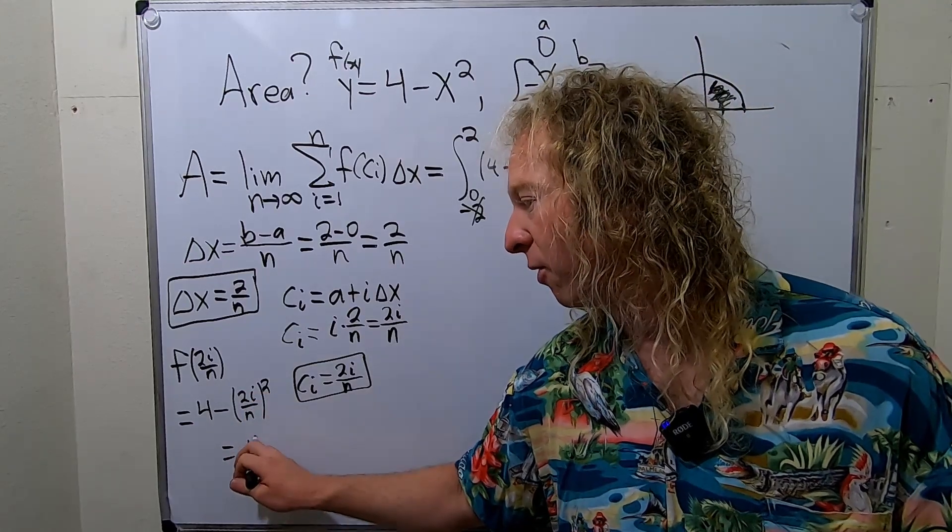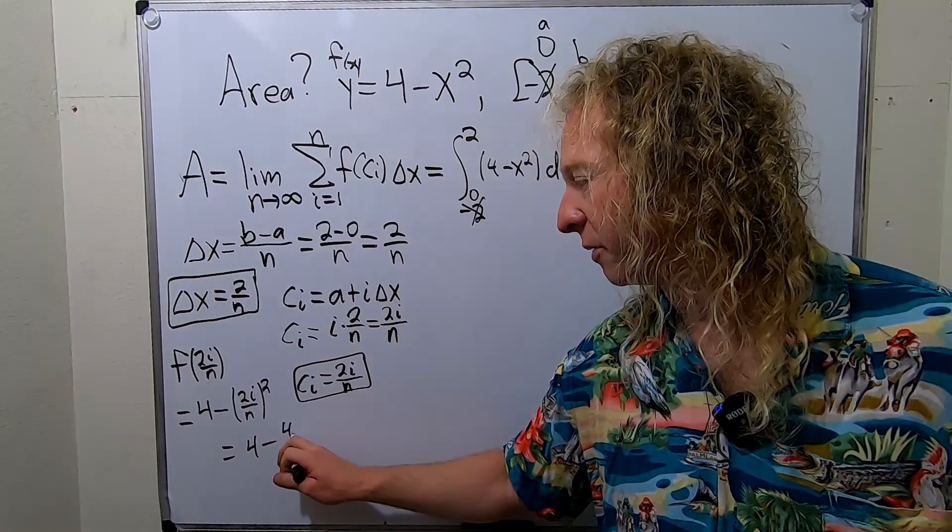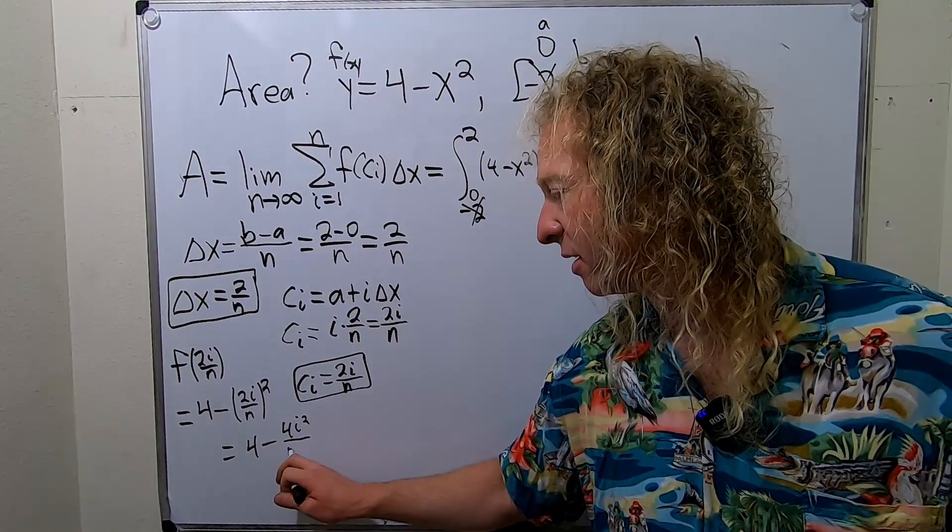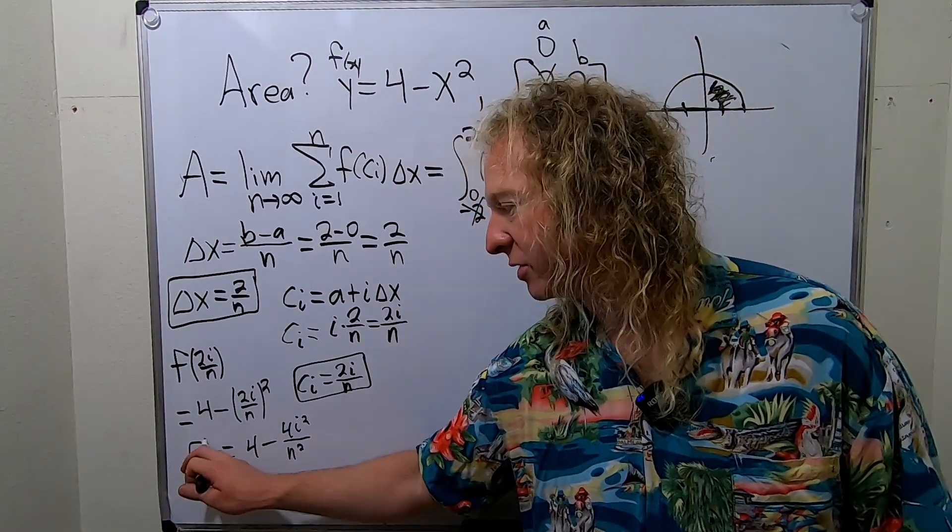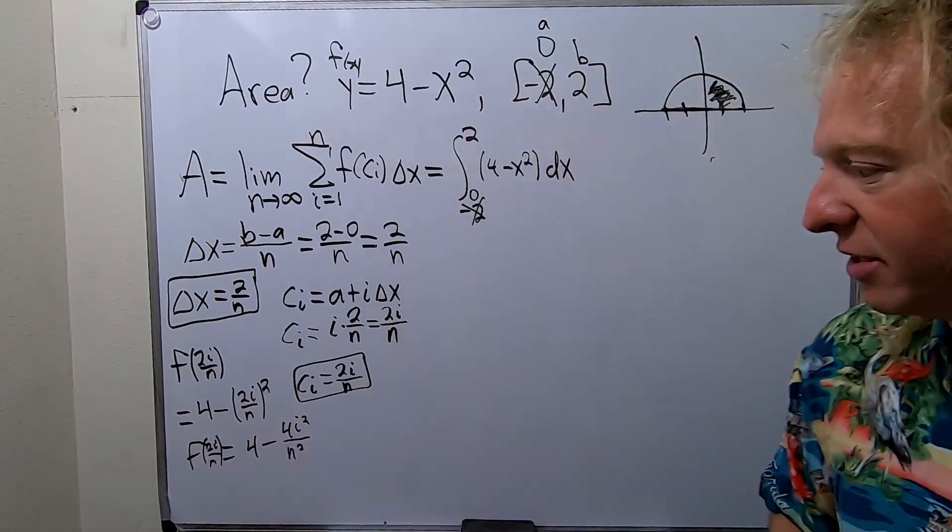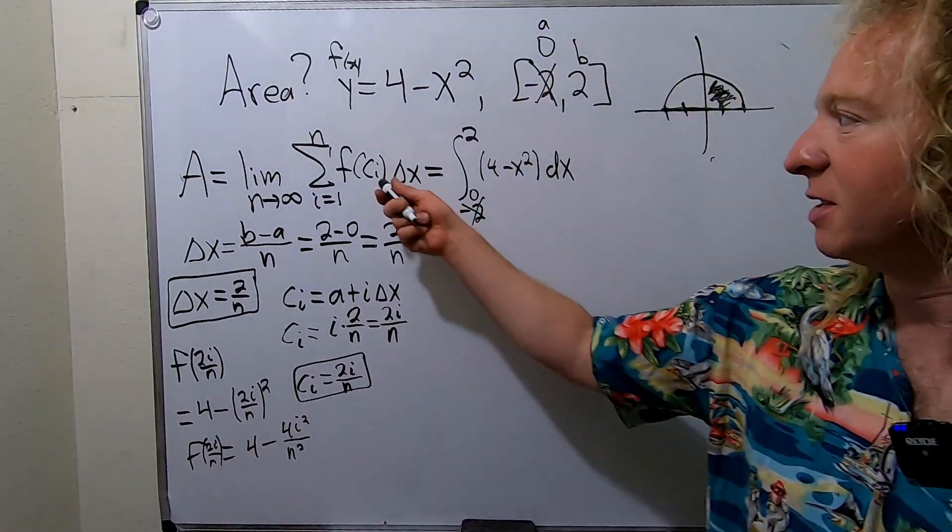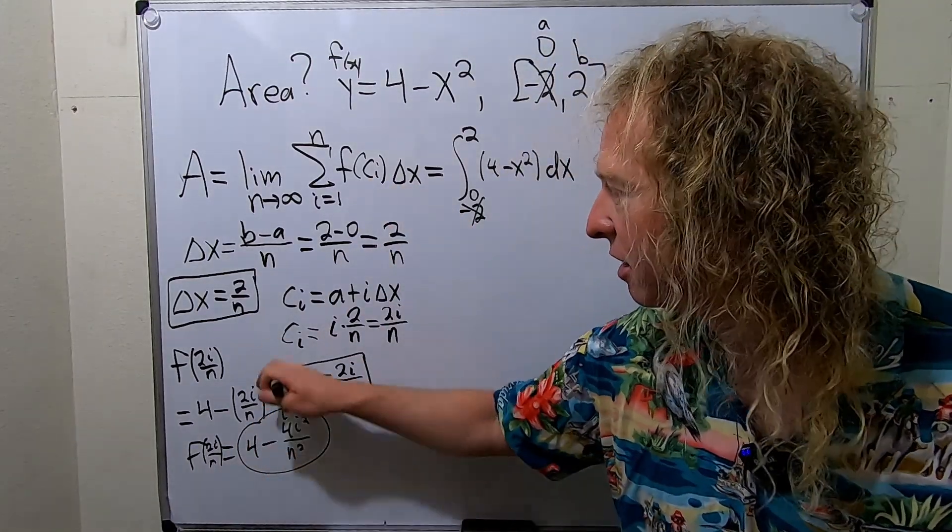So this is 4 minus, so you just get 4i squared over n squared. Going kind of fast. Let me go ahead and just rewrite it here. This is f of 2i over n. Okay, so that's our f of c sub i. So that's this piece. This is this piece here.